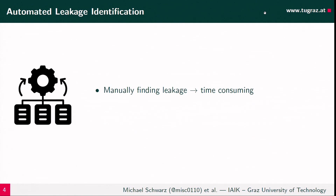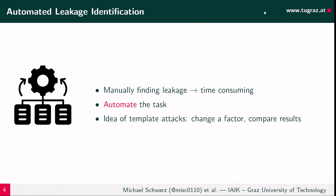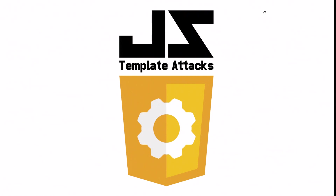We've known about this for some time and have searched for leaking properties in a non-automated way — manually checking which properties have differences. There are many papers about fingerprinting that find some differences, but this is time consuming. The idea is to automate this approach using a template attack: we change one factor, take measurements, change another environmental factor, take measurements again, and then look for differences.